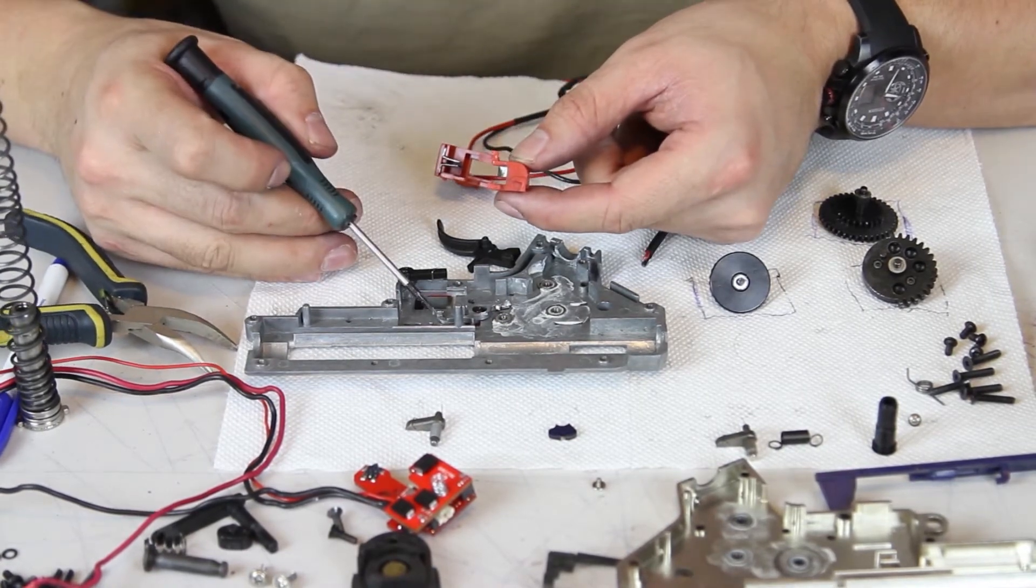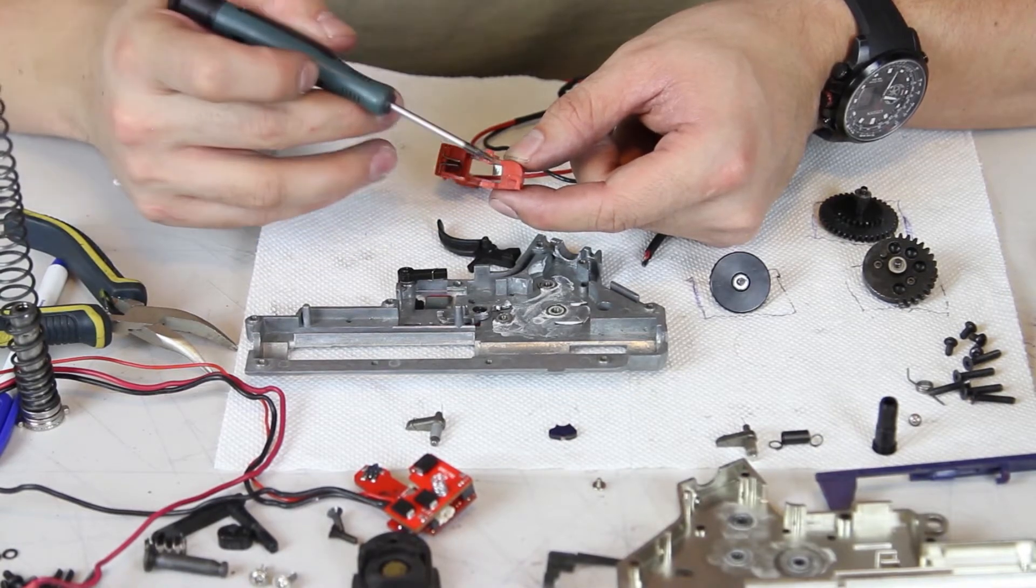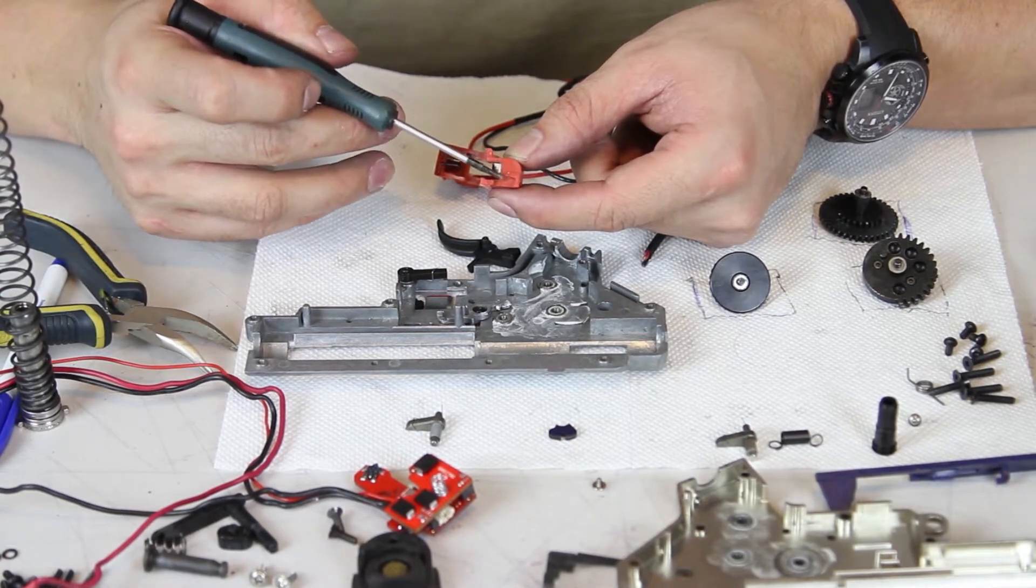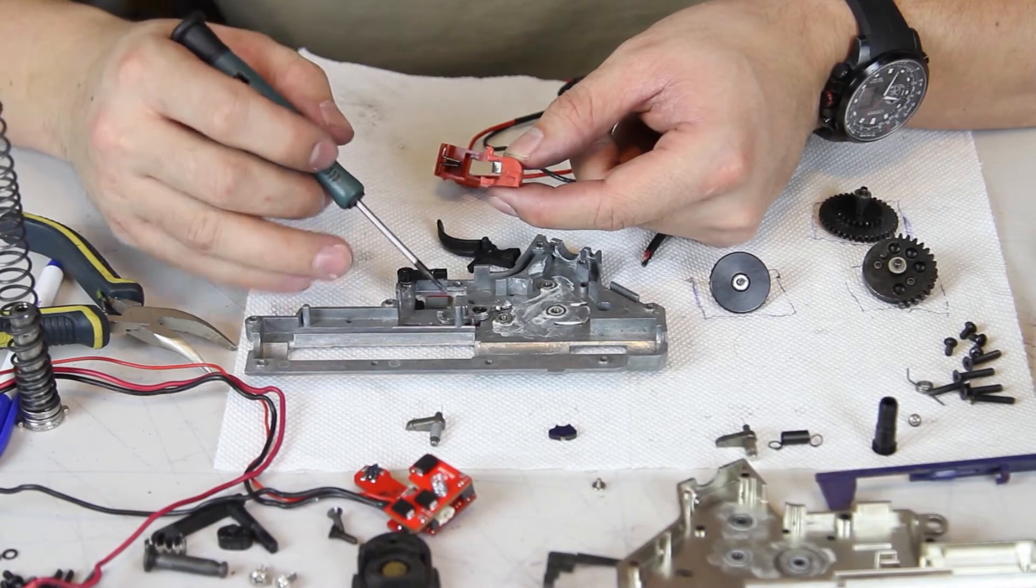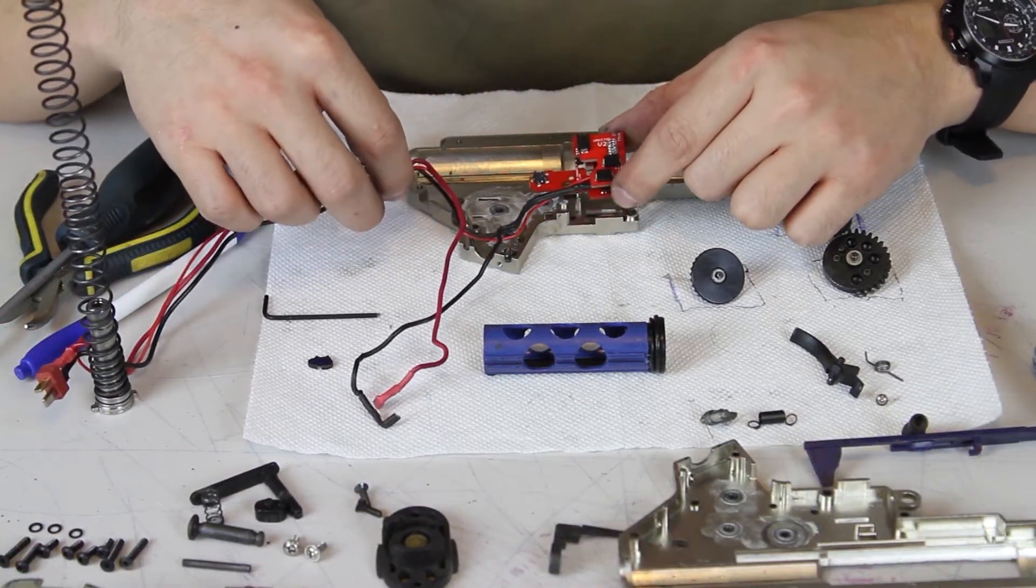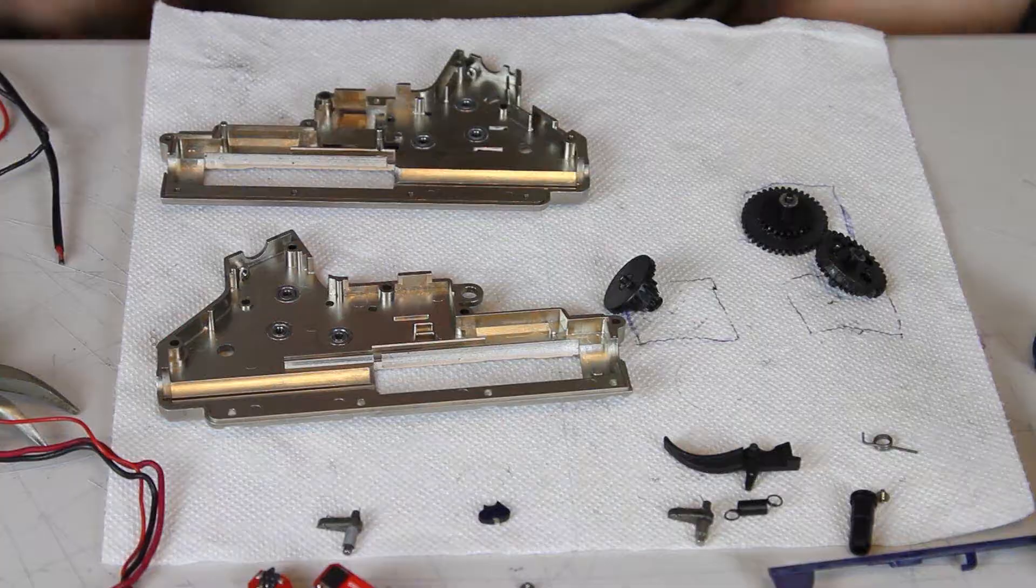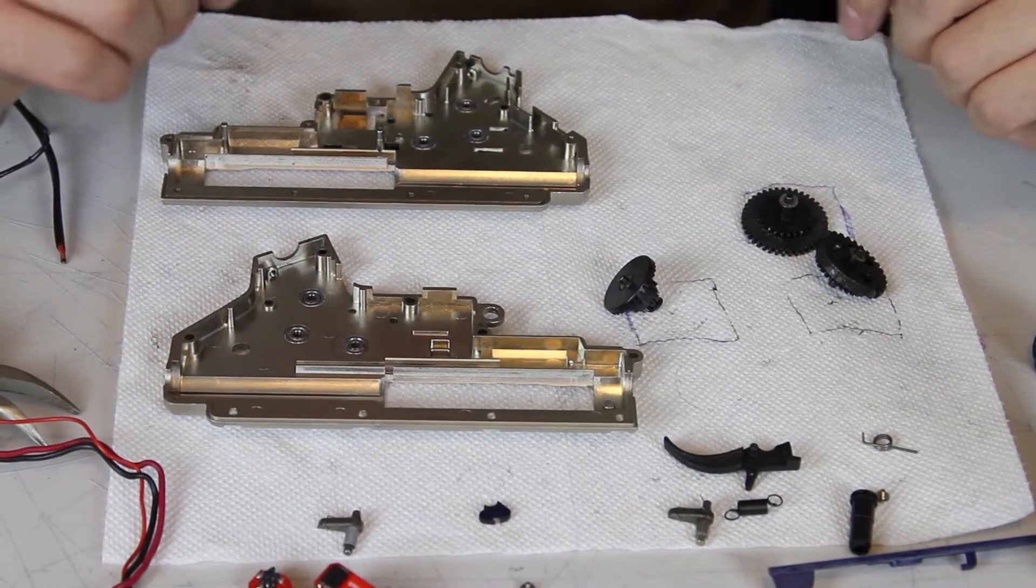When a stock airsoft gun is stuck in full-auto, it's usually a problem with the trigger unit and the cutoff lever. Over time, the stock trigger contacts will also wear out and may need to be replaced. Upgrading your trigger unit to an electronic controller, such as a MOSFET, is a great way to reduce potential points of failure in your gearbox.